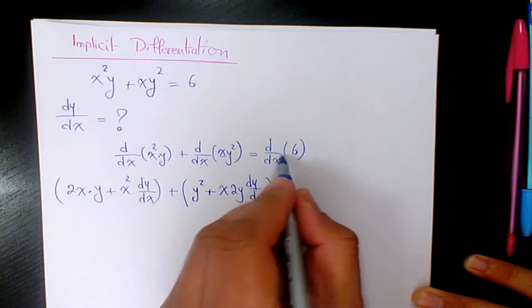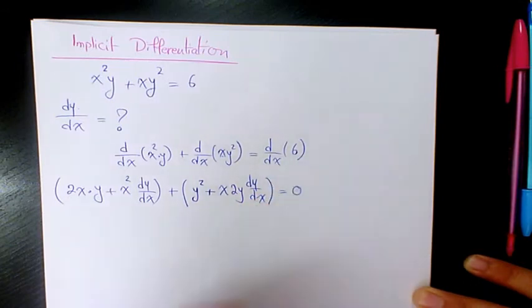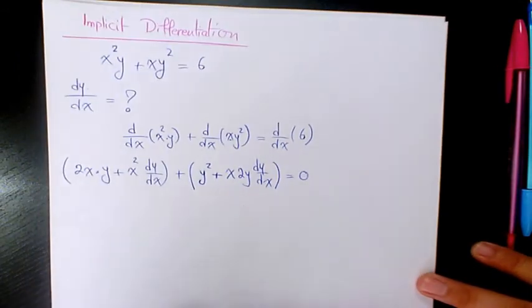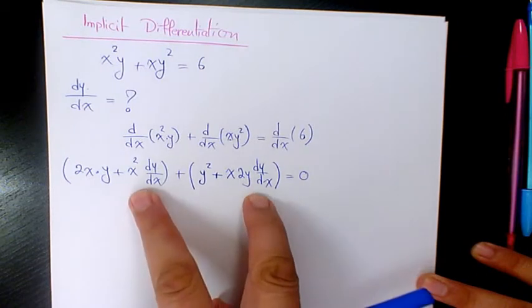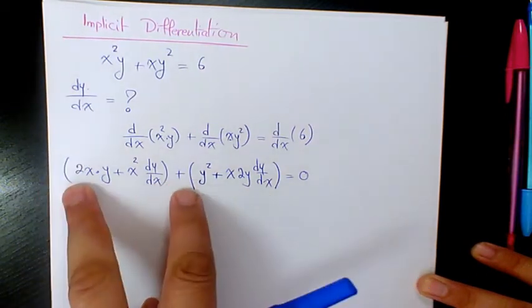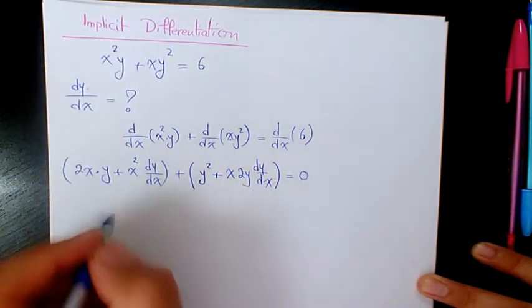Equals the derivative of 6 with respect to x, which is 0. Then we're going to simplify and keep these two on the left hand side and move these two to the right hand side. So it's going to be x squared plus 2xy.